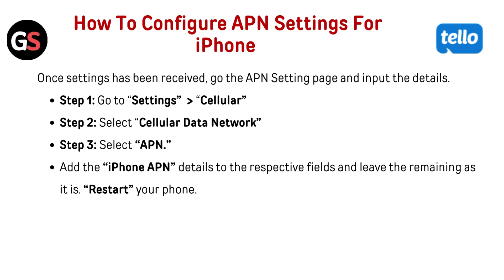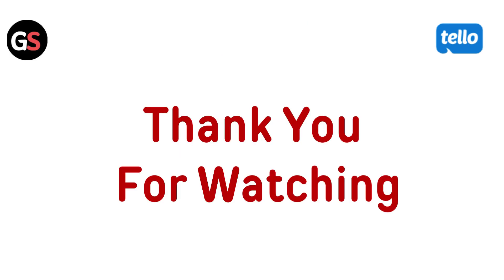How to configure APN settings for iPhone: once the setting has been received, go to the APN settings page and input the details. Step 1: Go to Settings, then Cellular. Step 2: Select Cellular Data Network. Step 3: Select APN, add the iPhone APN details to the respective fields, and leave the remaining fields as they are. Then restart your phone.